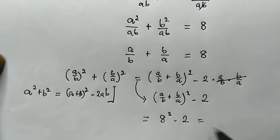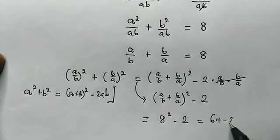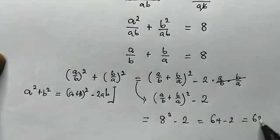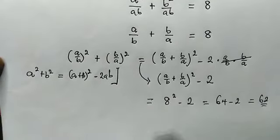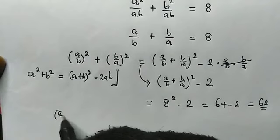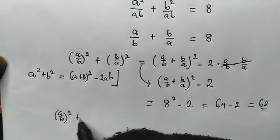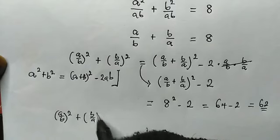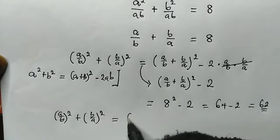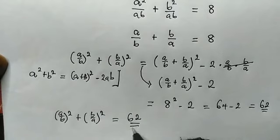8² is 64, then minus 2, which is equal to 62. So therefore, (a/b)² + (b/a)² is equal to 62, and this is the right answer.